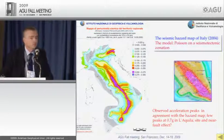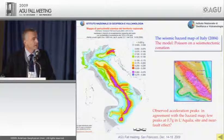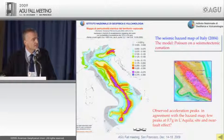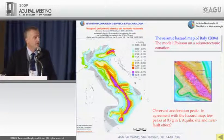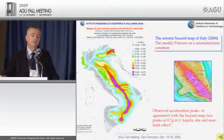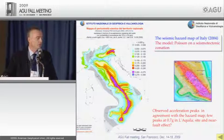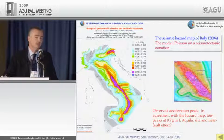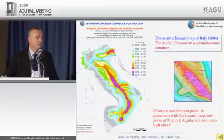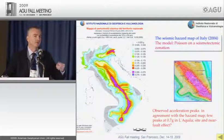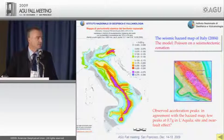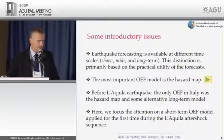The seismic hazard map for Italy shows that L'Aquila occurred in the violet — high hazard — area. Observed acceleration peaks are in general agreement with what the hazard map expects. There are a few peaks of 0.7g close to L'Aquila, very likely due to site effects and the fact that the fault was very close to the city, causing most of the damages.